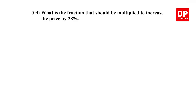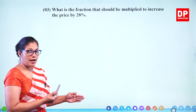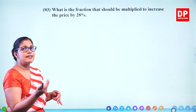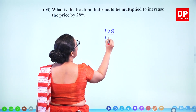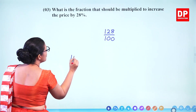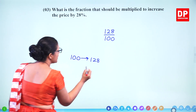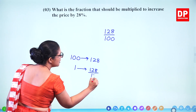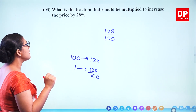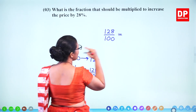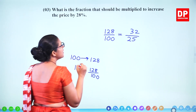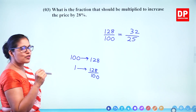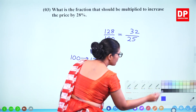Question number 3. What is the fraction that should be multiplied to increase the price by 28%? If you buy for 100 rupees you have to sell it for 128. So that's the fraction: 128 over 100. Divide by 4 to simplify — you get 32 over 25, or equivalently 128 over 100. Two marks for that.